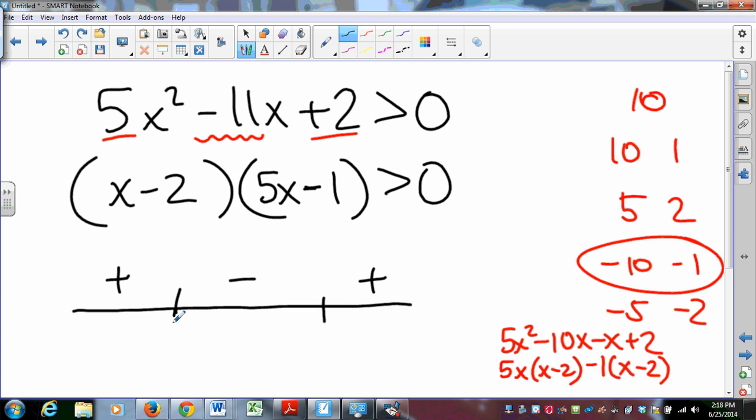So if I knew the two places where the parabola hit the axis, I would know the parabola is positive on one side, and then negative in the middle, and then positive on the other side. So where are those two places? Well, these two places are the places where the parabola is either zero or undefined. The parabola is never undefined, so it's zero at x = 1/5, and it's zero when x = 2.